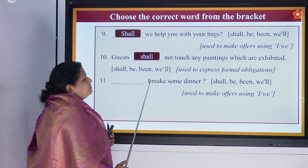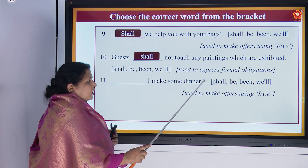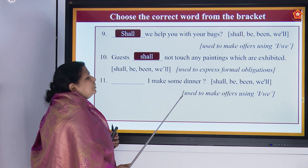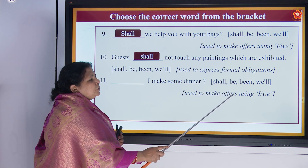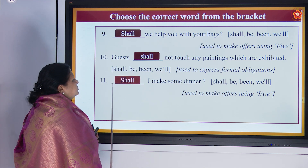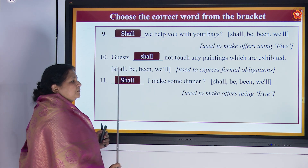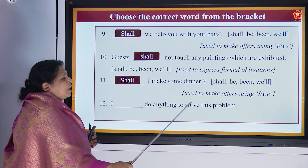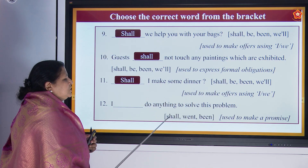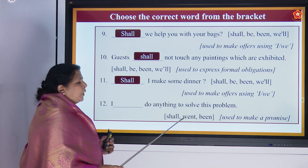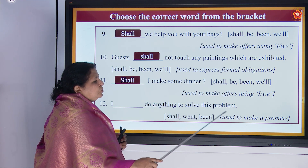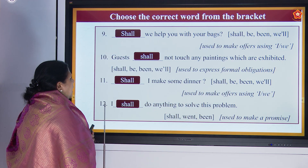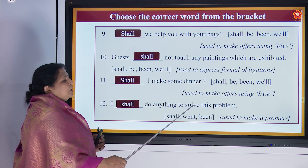Next: 'I dash, I make some dinner' — shall, be, or will? Used to make a promise. Then: 'I dash do anything to solve this problem' — shall, be, or will? Used to make a promise. Answer: 'I shall do anything to solve this problem.'